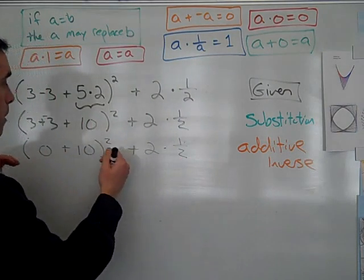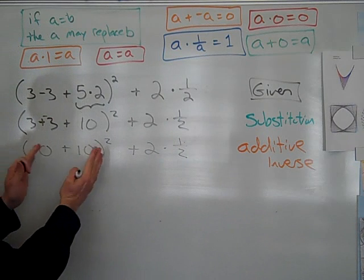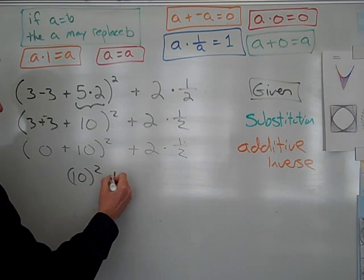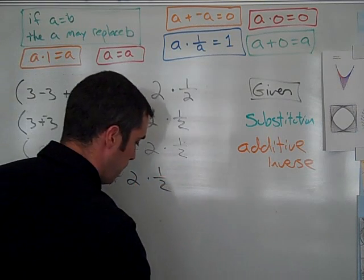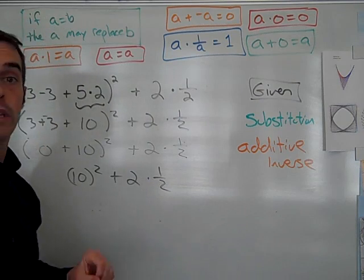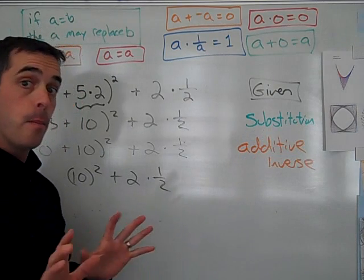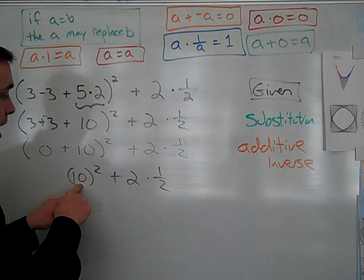I'll look at this again. I'm still working inside my parentheses. I have the operation of addition. 0 plus 10 is 10 squared plus 2 times 1 half. Again, this might look like substitution. That's always our fallback. I always say, when in doubt, sub it out. But we're not in doubt here.